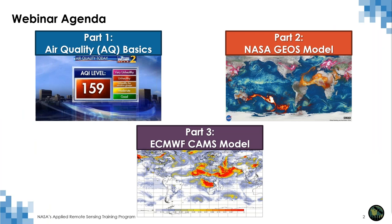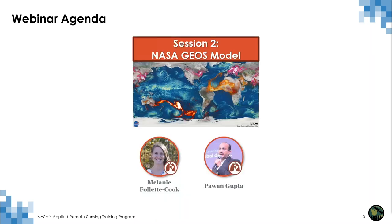Here's an outline of our webinar series agenda. Session one, hosted by my colleague Dr. Pawan Gupta, covered the science behind air quality forecasting and the parallels to weather forecasting. Pawan talked about different methods that can be used to forecast air quality, ranging from simple persistence models all the way up to very complex three-dimensional atmospheric chemistry models. Today, we'll talk about air quality relevant forecast and reanalysis products from one of those complex three-dimensional models, the NASA GEOS Earth System Model.